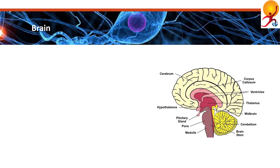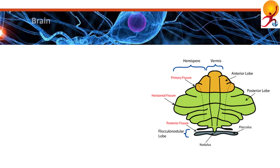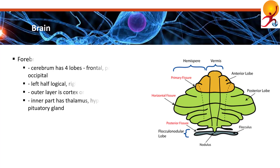The brain is made up of three main sections: the forebrain, the midbrain and the hindbrain. The forebrain is the largest and most complex part of the brain. It consists of the cerebrum and some other structures. The cerebrum contains information that essentially makes us who we are — our intelligence, memory, speech and ability to feel — with specific areas of the cerebrum in charge of processing each different type of information.